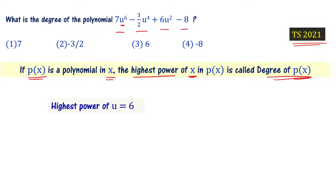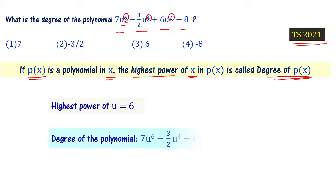Looking at all the terms, the highest power of u is 6 — we have u⁶, u⁴, and u². So the highest power is 6, meaning the degree of this particular polynomial is 6. Choice 3 is the answer.